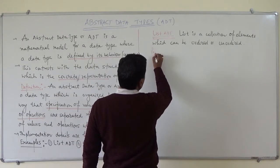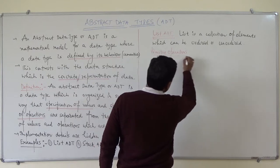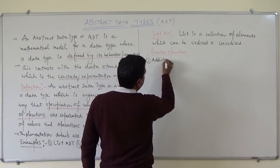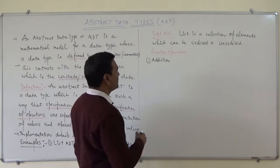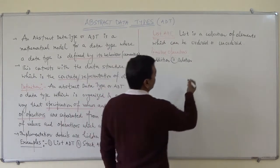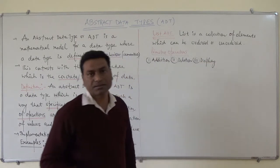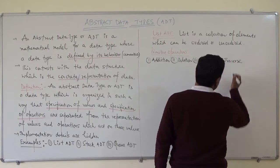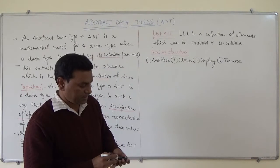Now we are discussing list ADT and the primitive operations on this list may be: first, addition — addition or insertion of elements on the list; second, deletion — deletion of elements; third, display — display of the elements; and fourth, traverse — traverse a list. These are the four primitive operations on any list that we can do.